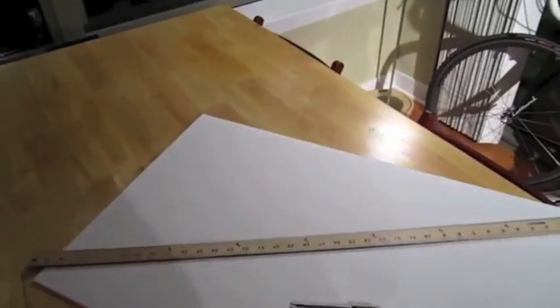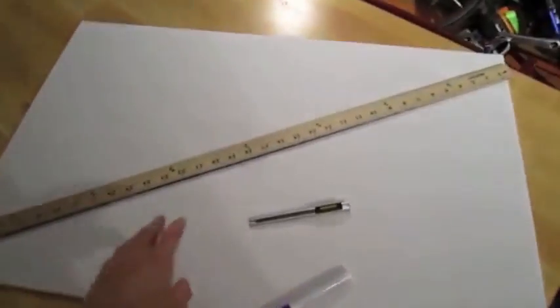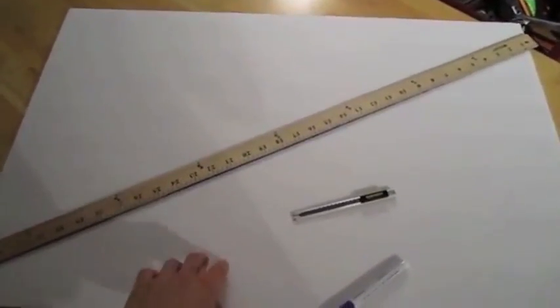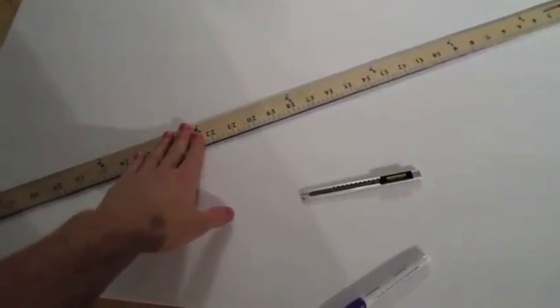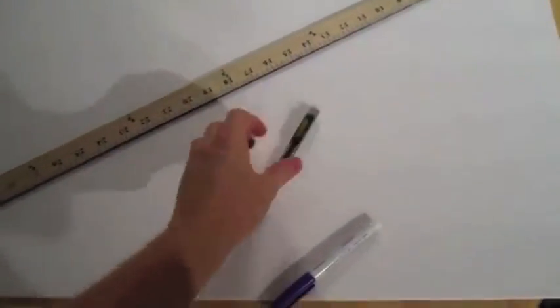To start off with, you need a 30x20 sheet of foam board from the Dollar Tree, a ruler, yardstick, a knife, a marking pen, and some pink foam, and we'll get started.